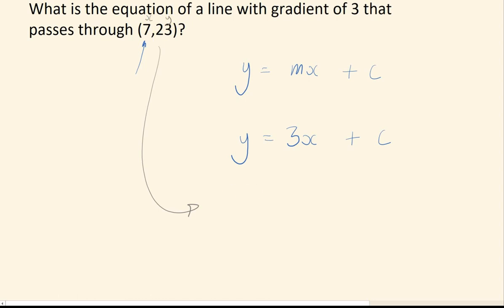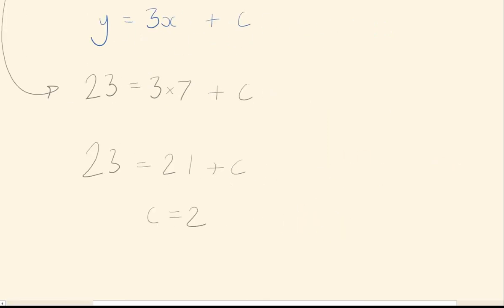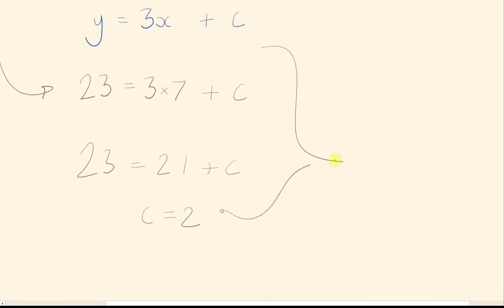So I know here, x was 7 and y was 23. So let's plug that in. We can then work out 3 times 7 is 21. And then solving that, we can see c is 2. So for your final answer, you basically merge these two together. To say, y equals 3x plus 2.